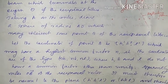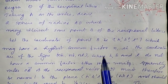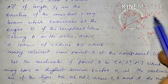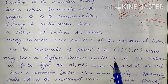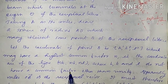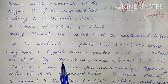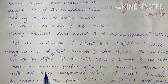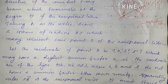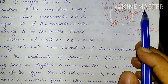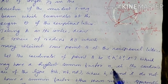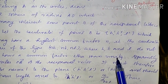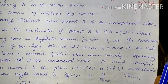Let the coordinates of point B be H', K', L', which may have a highest common factor N, so they can be represented as NH, NK, NL, where H, K, and L do not have a common factor other than unity.